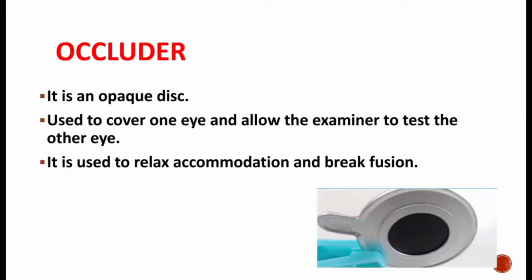Occluder is an opaque disk. Opaque means light rays are blocked in the opaque medium. When occluder is placed in front of our eye, the light rays are unable to pass into our eye. If we need to examine one eye, the other eye should be occluded with the occluder.